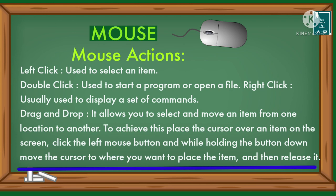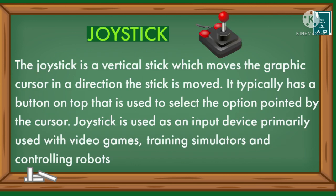Drag and drop allows you to select and move the cursor to where you want to place the item and then release it. The joystick is a vertical stick which moves the graphic cursor in the direction the stick is moved. It typically has a button on top used to select the option pointed by the cursor. Joystick is used as an input device primarily with video games, training simulators, and controlling robots.